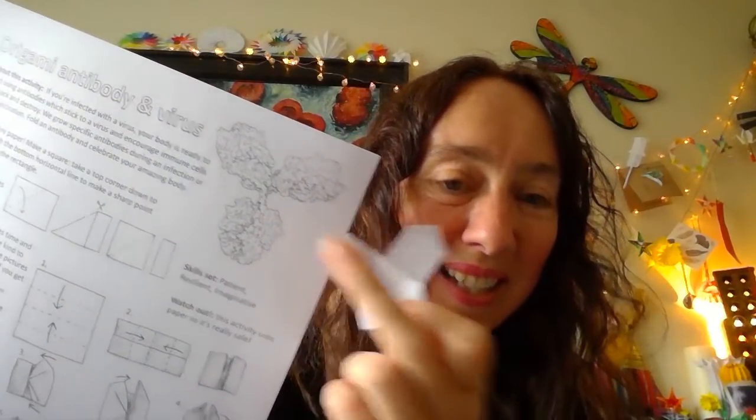So your body makes these Y-shaped proteins that look like this and they help your body spot any intruders, things like viruses or bacteria. They go and stick to them and let your body know to attack and destroy.